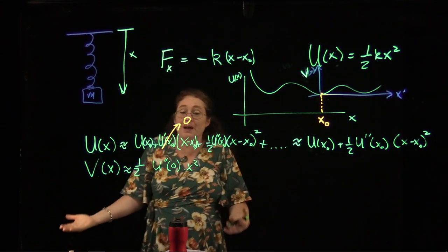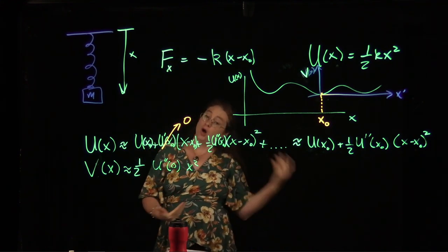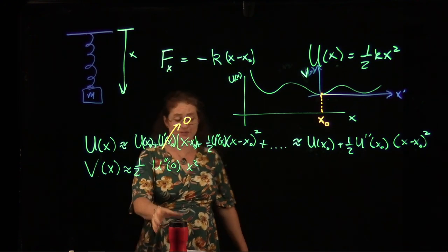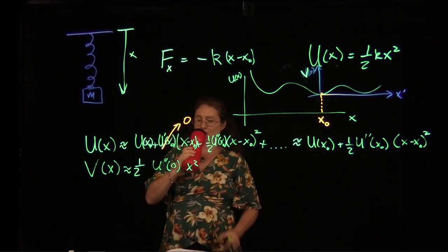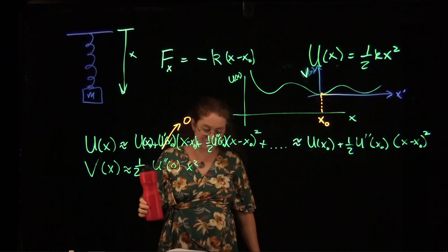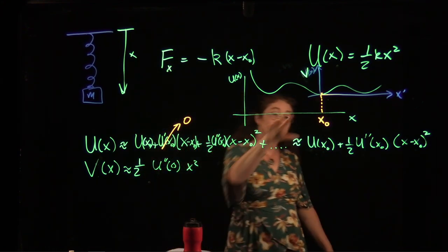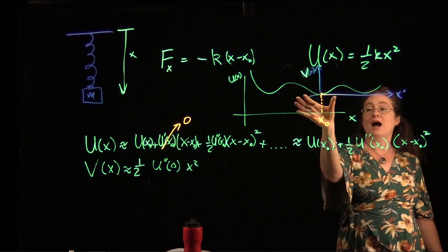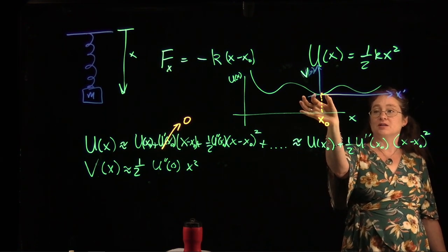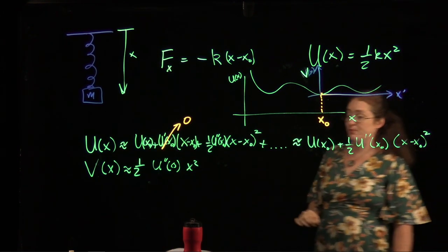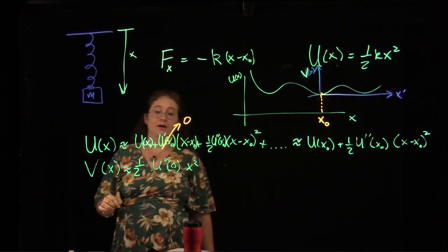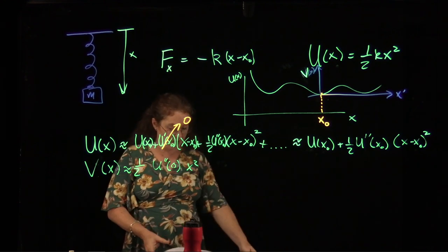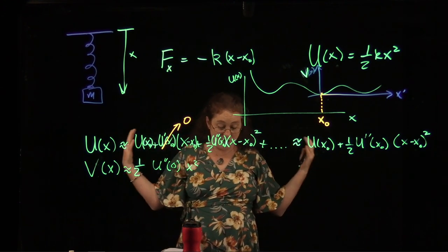Any time I have a stable equilibrium, I can approximate my system as a mass on a spring. Isn't that beautiful? Any type of bound system — because you can always take a Taylor series — you can always estimate a bound system as a mass on a spring. How good that approximation works depends on how far the dip can be approximated as a parabola, but you can do it all the time.